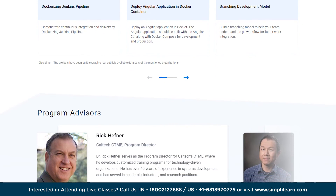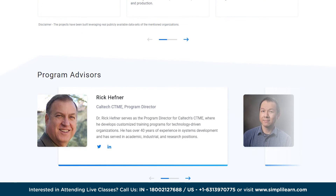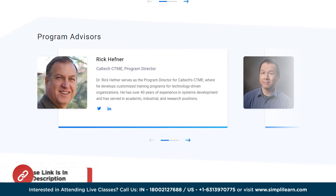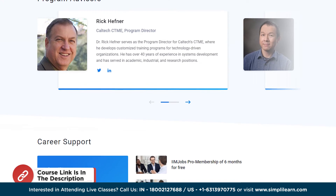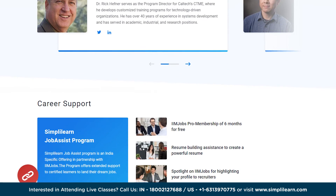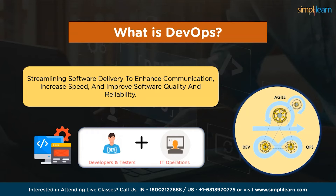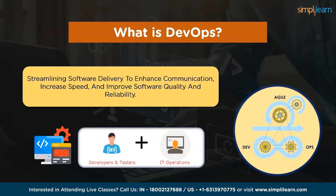Let us understand what DevOps is. DevOps is a software development approach that emphasizes collaboration, automation and communication between development and operations teams. It aims to streamline the entire software development lifecycle by integrating and optimizing processes, tools and methodologies. It encourages a culture of shared responsibility where developers and operations teams work together closely throughout the entire software development lifecycle — from planning and coding to testing, deployment and monitoring.